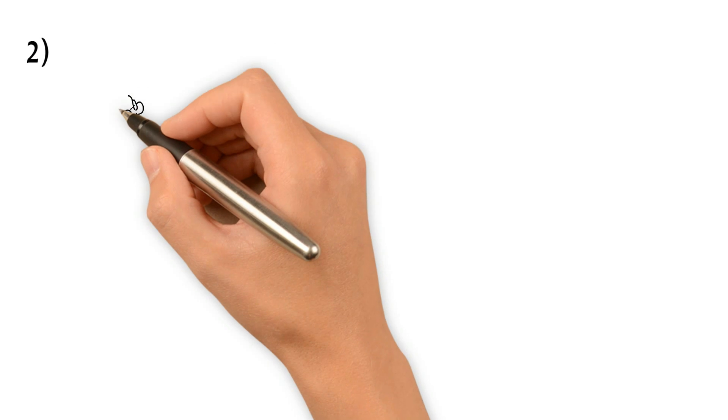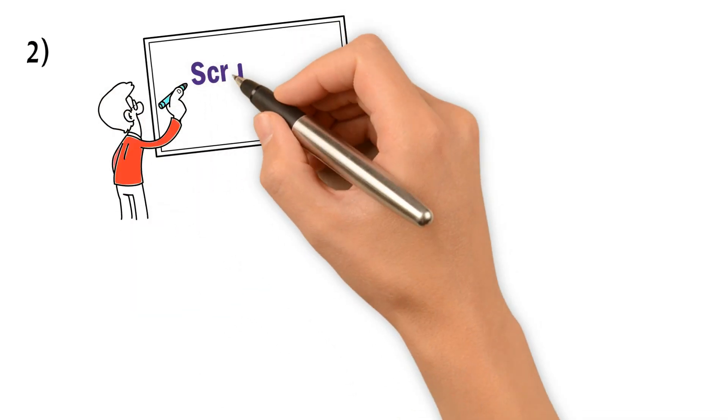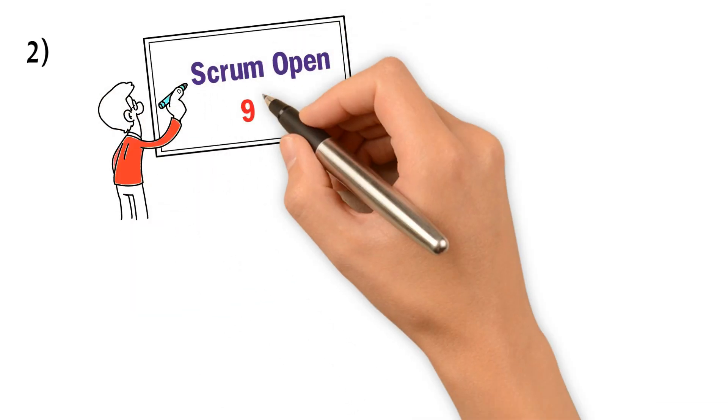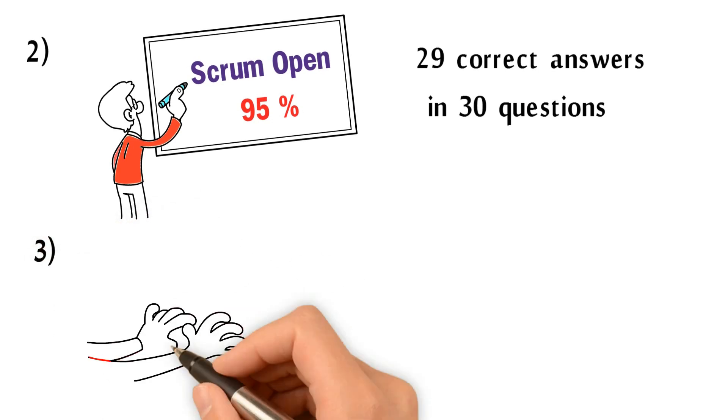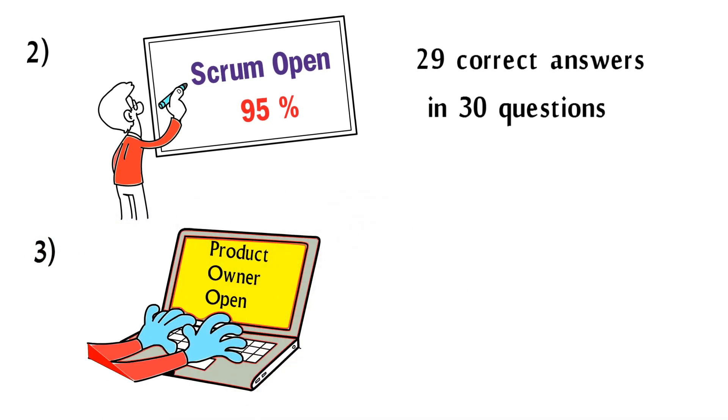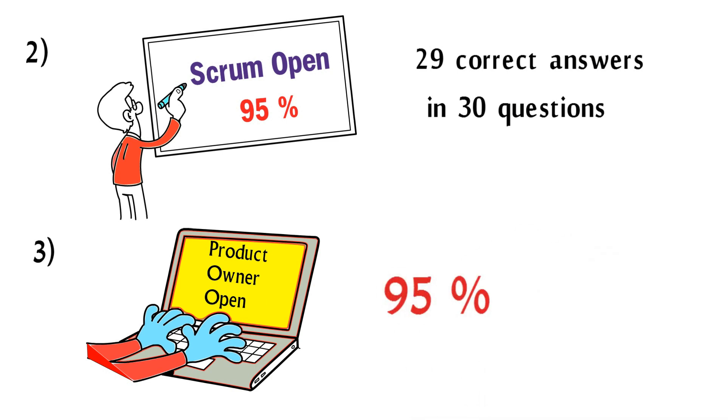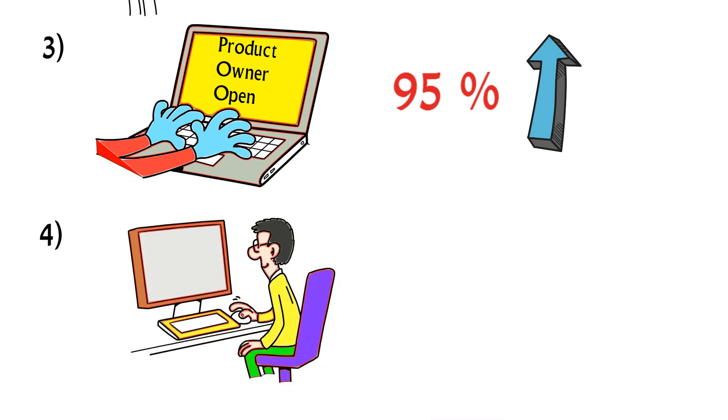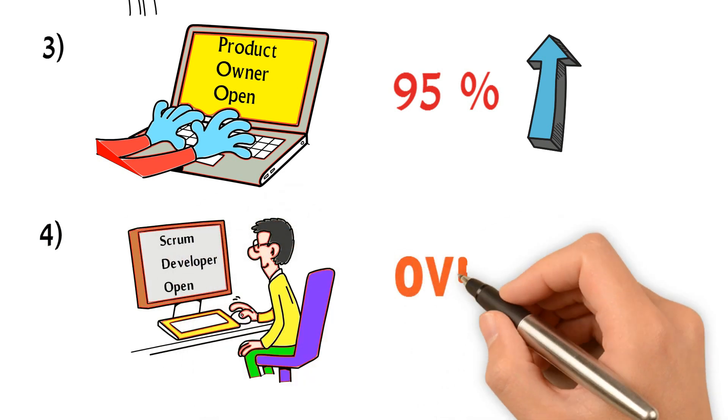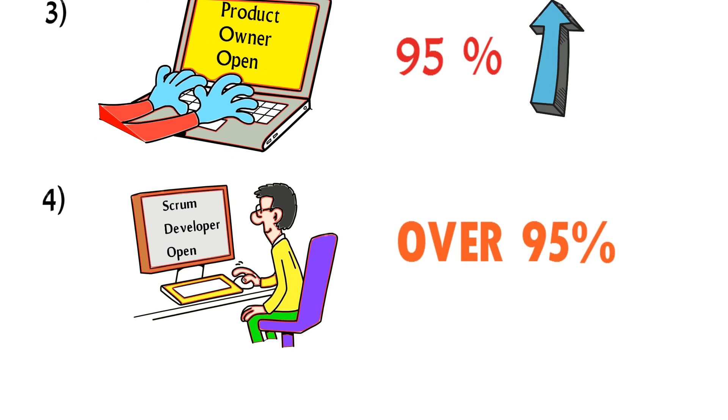Two, practice the Scrum Open in Open Assessments until score at least 95%. Three, practice Product Owner Open in Open Assessments until score over 95%. Four, practice the Scrum Developer Open in Open Assessments until score over 95%.